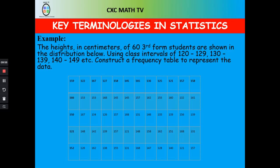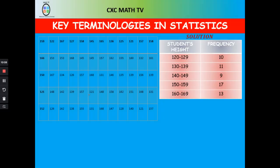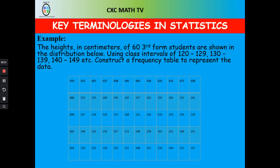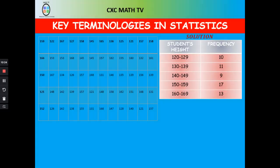We're going to do an example to utilize everything we just learned. The question says: construct a frequency table to represent the data. Pause the video and attempt the question. The frequency table obtained has an interval of 120 to 129 — going through and circling all the values in the 120s gives a frequency of 10.